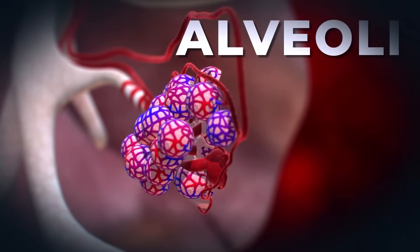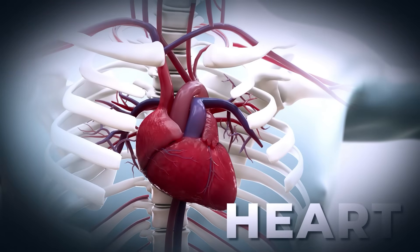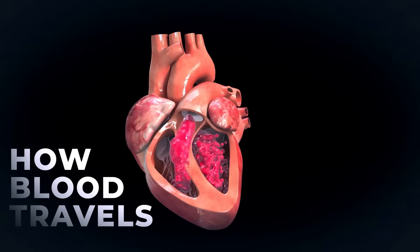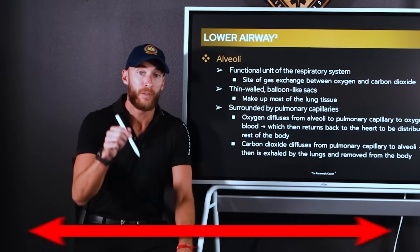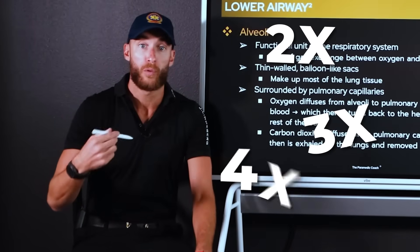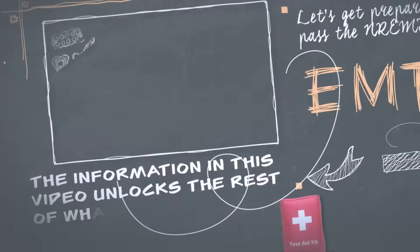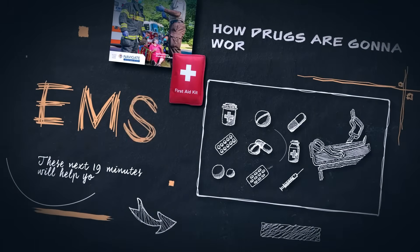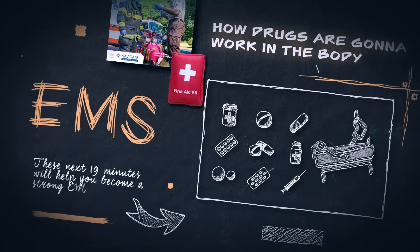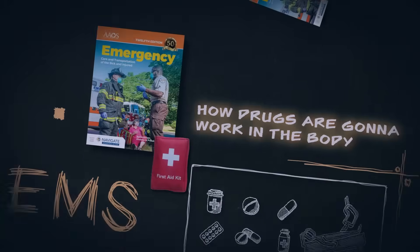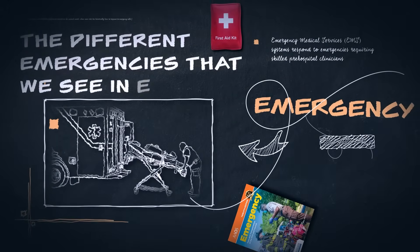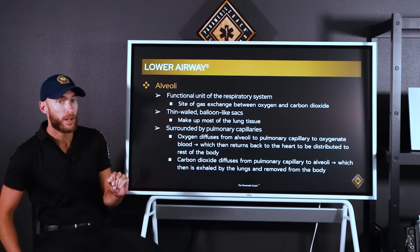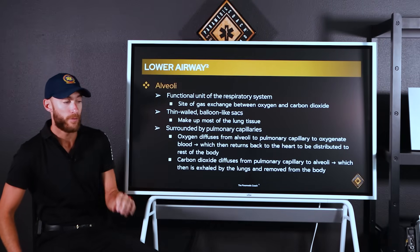Later on, we're going to move into the heart and how blood travels through the heart itself. You're going to want to watch the entire video, watch it two, three, four times, because the information in this video unlocks the rest of what you learn — how drugs work in the body and a lot of different emergencies that we see in EMS. Let's start with learning about the alveoli itself.